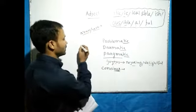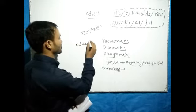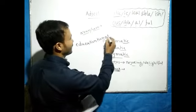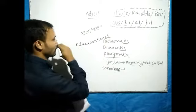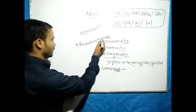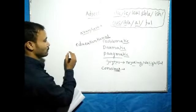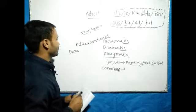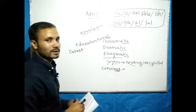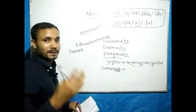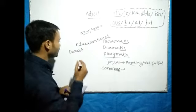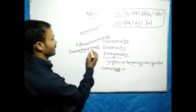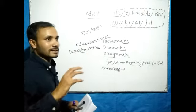If we write something and add the suffix '-al' to it, then it becomes an adjective. For example, the word 'department' — we all know department. When we add '-al' to department, we get 'departmental,' meaning 'vibhagiya' (departmental/divisional). So by adding '-al,' an adjective is formed, and the meaning becomes 'departmental' or 'divisional.'